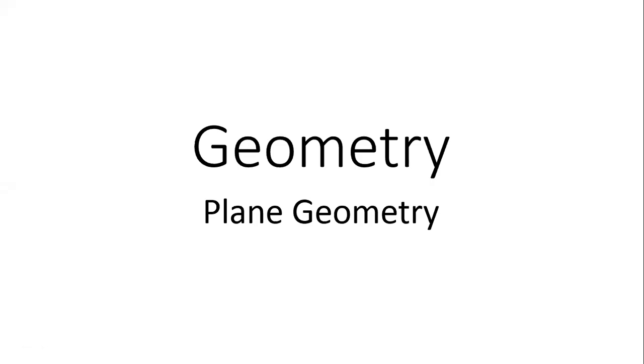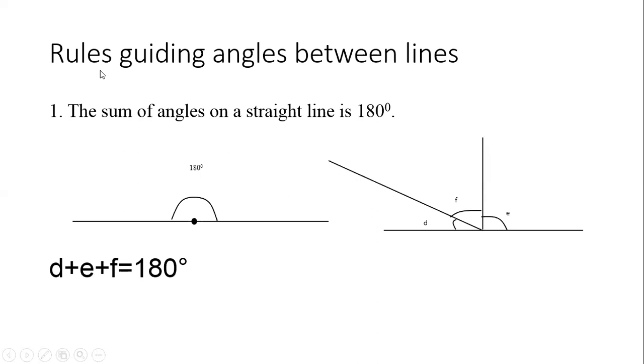We are considering geometry — specifically plane geometry. Geometry has to do with measurements of angles in shapes. In plane geometry, before we talk about plane shapes, we know angles are formed when two lines meet at a point. So before we begin to talk about shapes, we first have to talk about angles and the rules guiding them. The first topic is: rules guiding angles between lines.